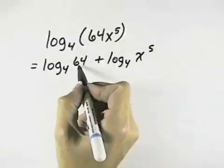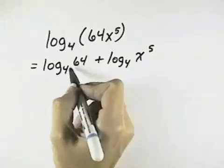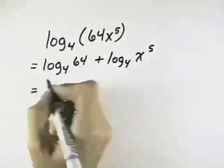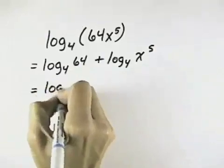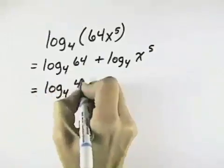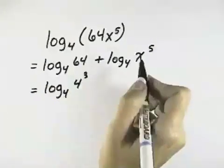Now if we could get the 64 written as a power of 4, we'd be able to simplify the log part. And as it ends up, log base 4, 64 is 4 to the third power, so we can express it that way.